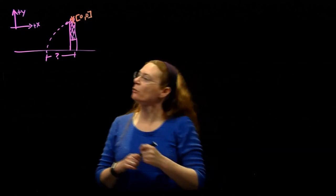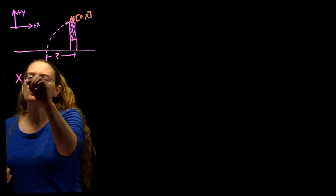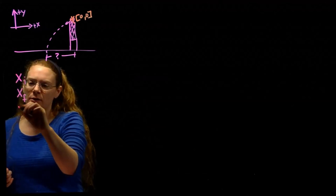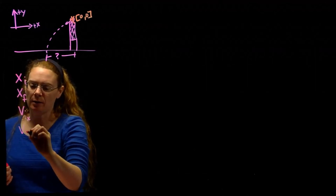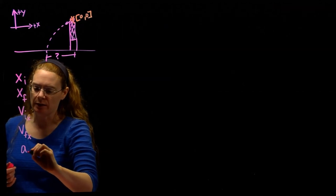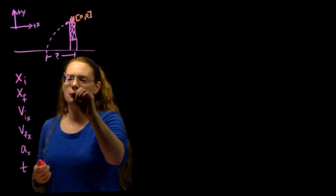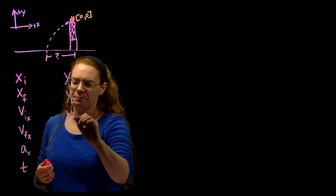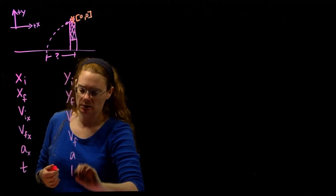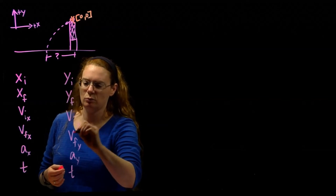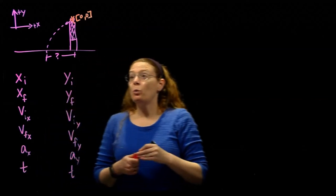So our knowns and our unknowns. We've got two different charts, because we've got two different directions, and they are independent, we've got to keep track of them separately. So there's my 6 horizontal, and my 6 of vertical.